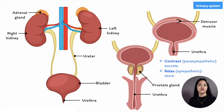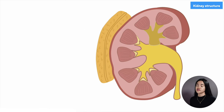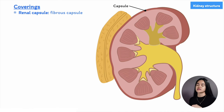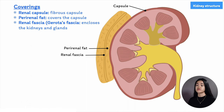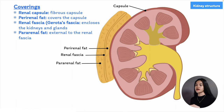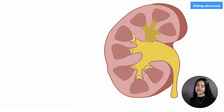Now let's zoom in on one of the kidneys and break down its layers and internal structures. The kidneys are surrounded by intricate layers of fascia and fat. Around each kidney is a renal capsule — a layer of fibrous connective tissue that protects the inner structures. The next layer is the perinephric fat or perirenal fat surrounding the kidney. Then there's the renal fascia, also known as Gerota's fascia, which encloses the kidneys and adrenal glands, and outside the fascia there's another fat tissue layer.